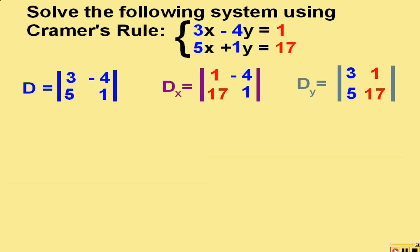Now that we have all three determinants, we will simply solve each one and get those values. Three times one is three, minus negative four times five, which is negative twenty. And three minus negative twenty is positive twenty-three.